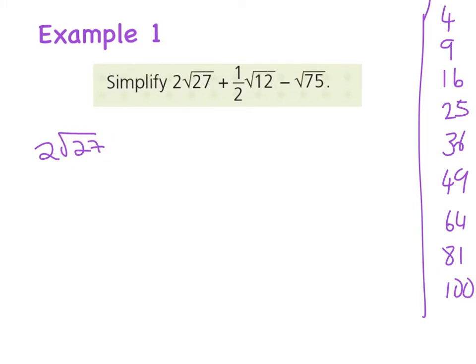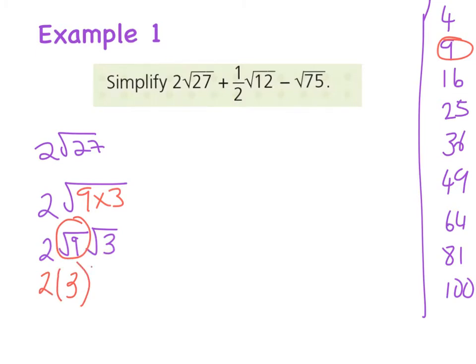So 27 I can rewrite that as 2√(9×3). Okay, that's the biggest square number there that's a factor of 27. So using that now I can say well that's really 2 times √9 by √3. And I know that √9, well I should know that is 3. So that really means 2 times 3 times √3, which gives me 2×3 are 6√3. So I've rewritten 2√27 as 6√3.